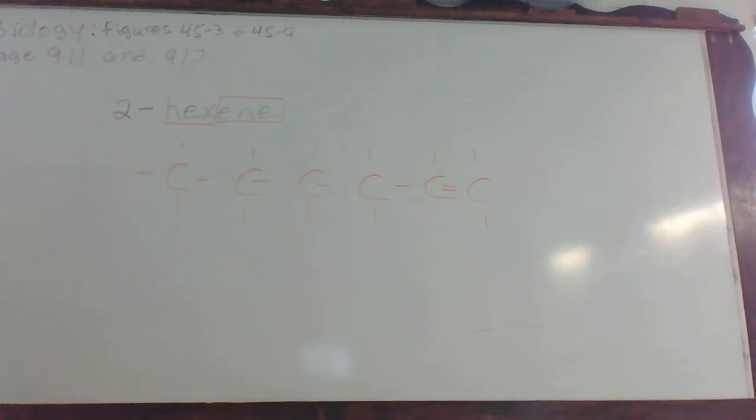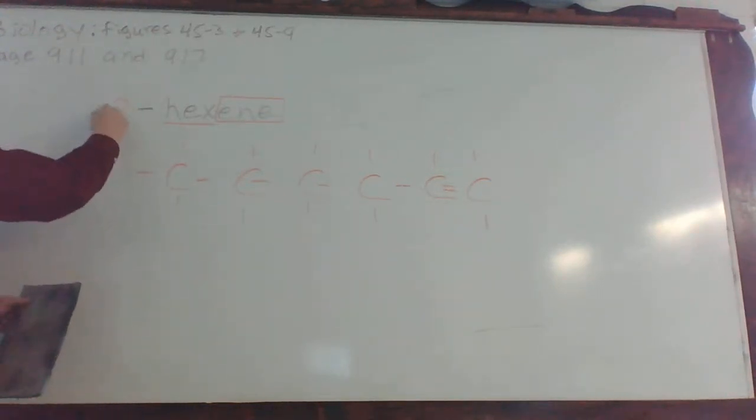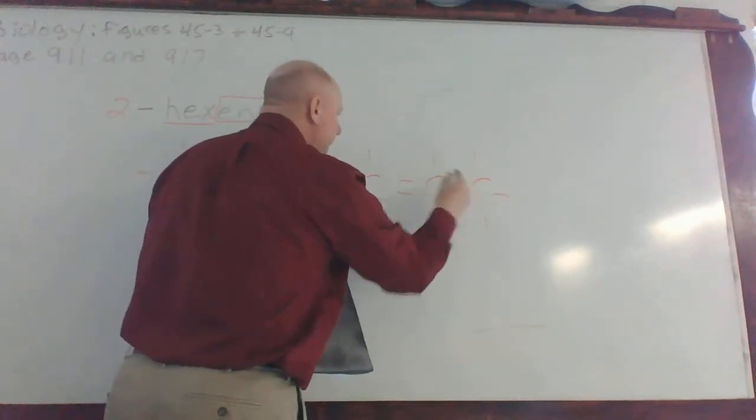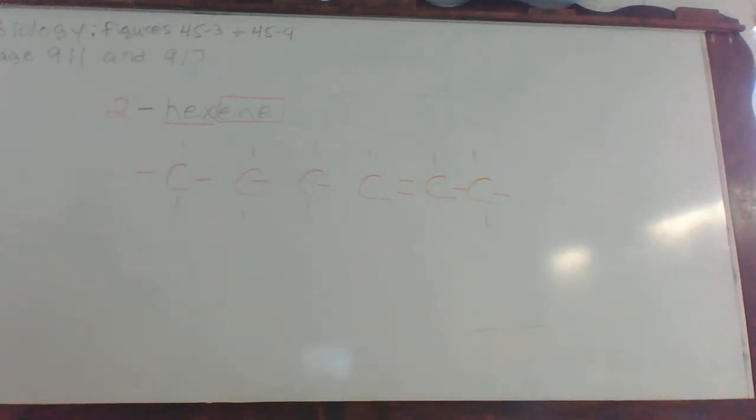What would the simplest way to make an isomer of two hexine? I still don't have it written correctly. Do I? I just caught it. No one else did. Now, we've got hexine. Now, you've got two hexine. Simplest thing. You go three hexine.